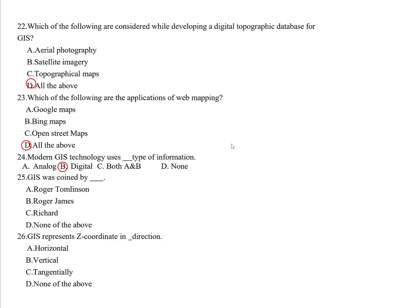Question twenty-five: GIS was coined by which of the following — Roger Tomlinson, Roger James, Richard, or none of the above? The correct answer is Roger Tomlinson, who is called the father of GIS and was the first to use and comprehensively define the term GIS.